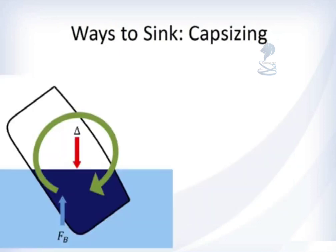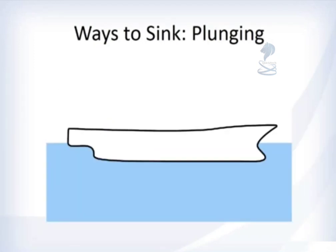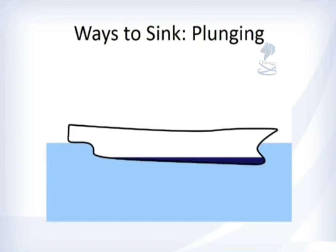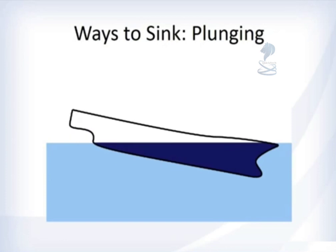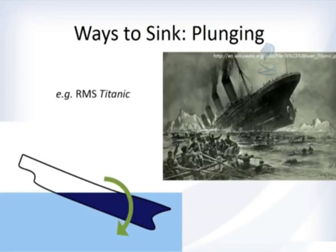Capsizing, which we have talked about with initial stability, is when the ship heels over so much that it does not have a righting moment to bring itself back upright again. A recent example of this was the Costa Concordia. The last mode is plunging — when the bow is damaged, flooding begins there and spreads, the bow sinks lower and lower until it plunges below the surface. A famous example of this is the Titanic.